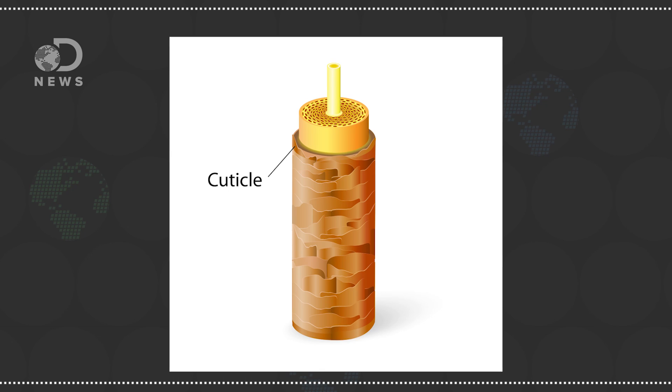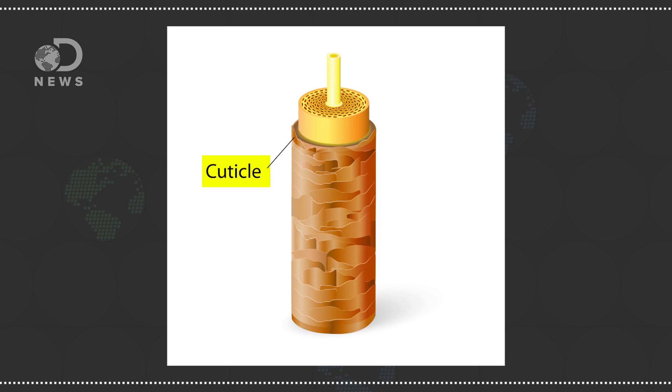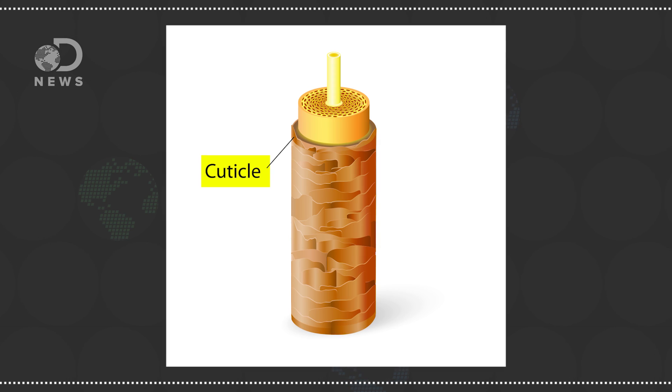Curly hair actually tangles less than straight hair. A study published in the American Journal of Physics found that the angle at which straight hairs bump into each other is most likely to cause tangling. The outside of your hair shaft, called the cuticle, consists of a series of overlapping keratin cells, like shingles on a roof. If the hairs meet at a sharp angle, the cuticles can hook onto each other. Although straight hairs meet less often than curly hairs overall, when they do, they tend to meet at steeper angles, and thus are more likely to hook and tangle than curly hairs.